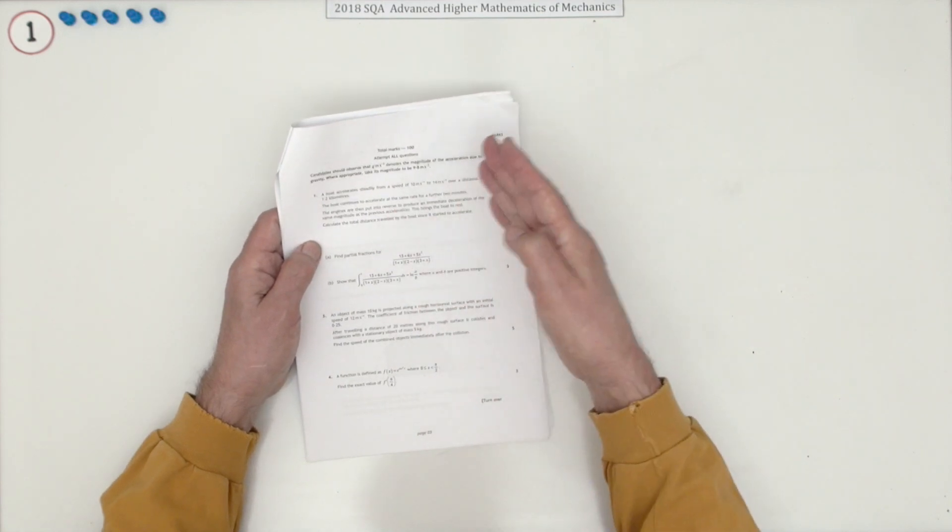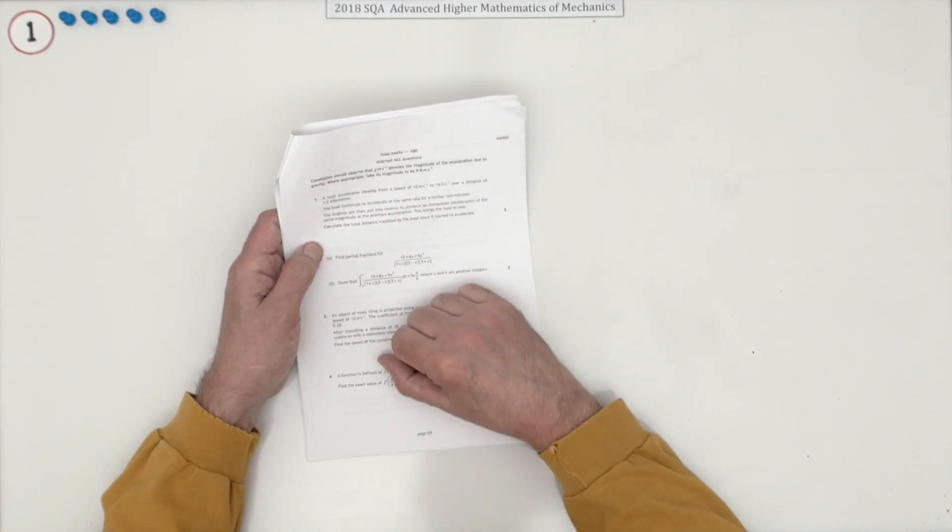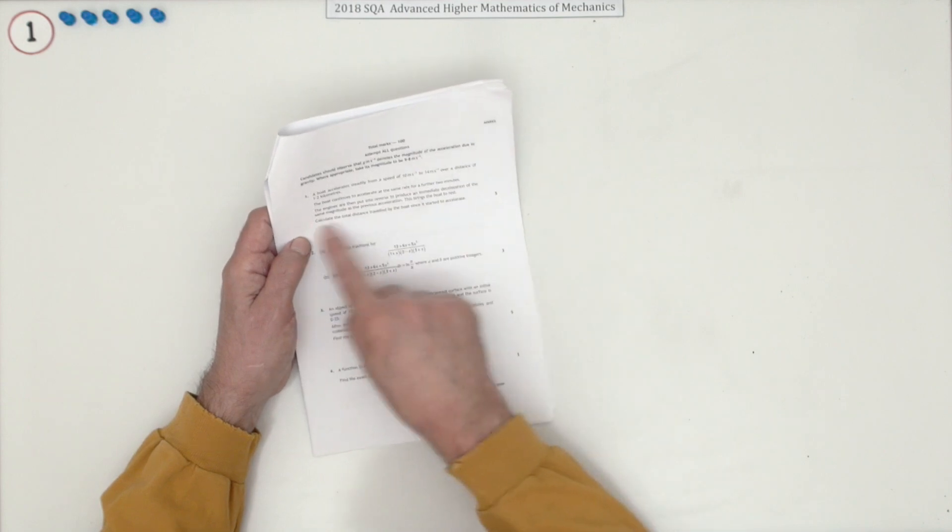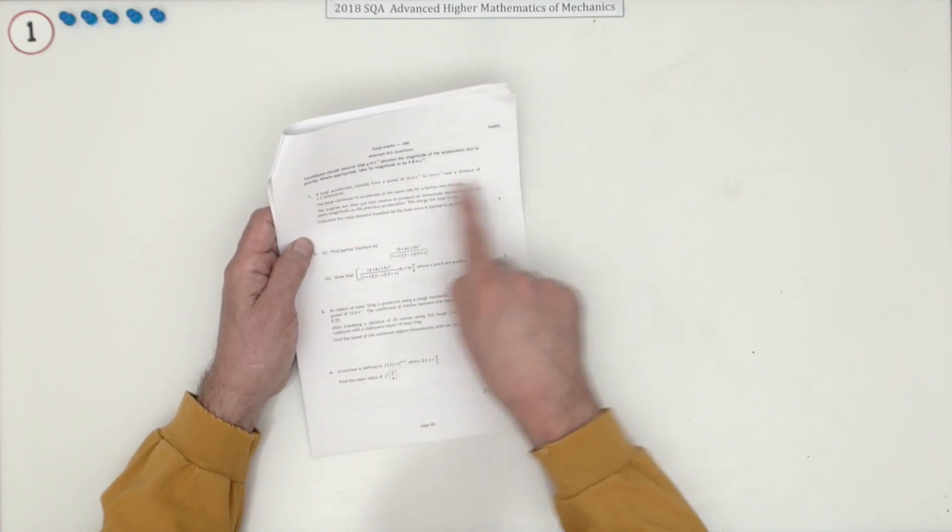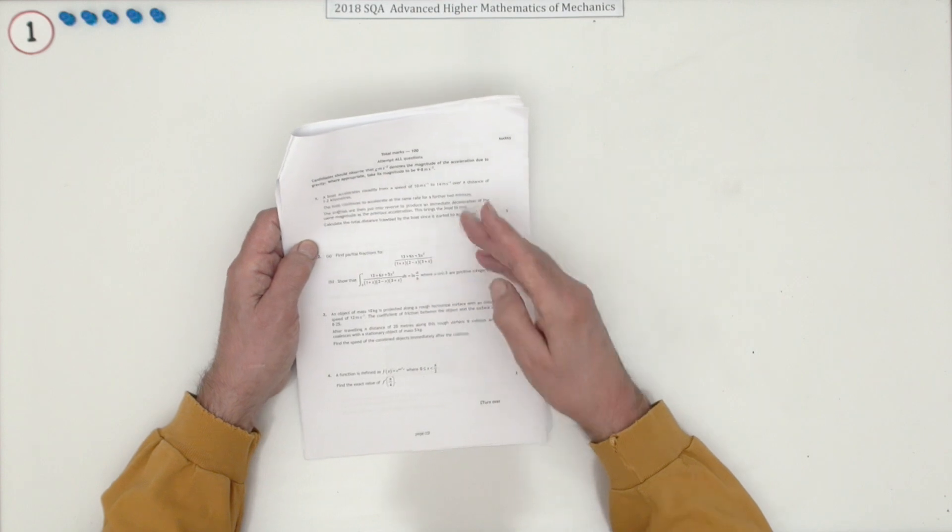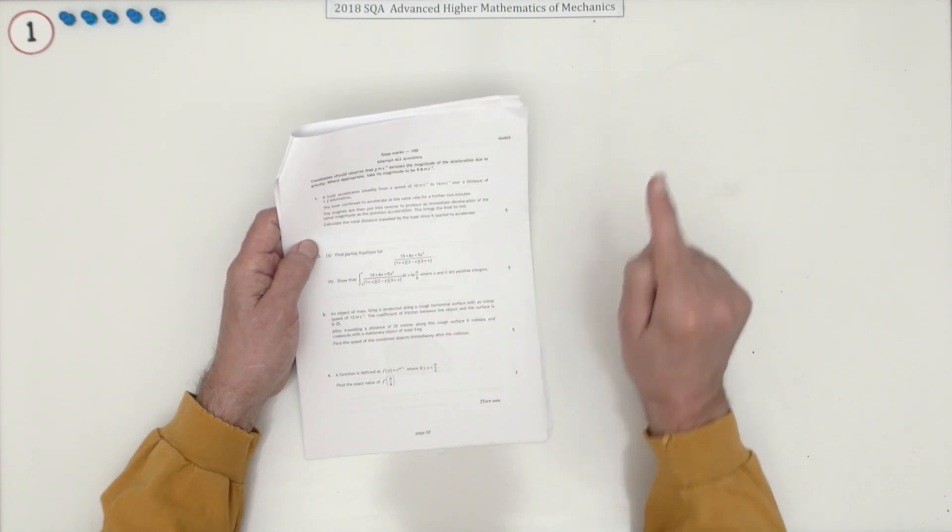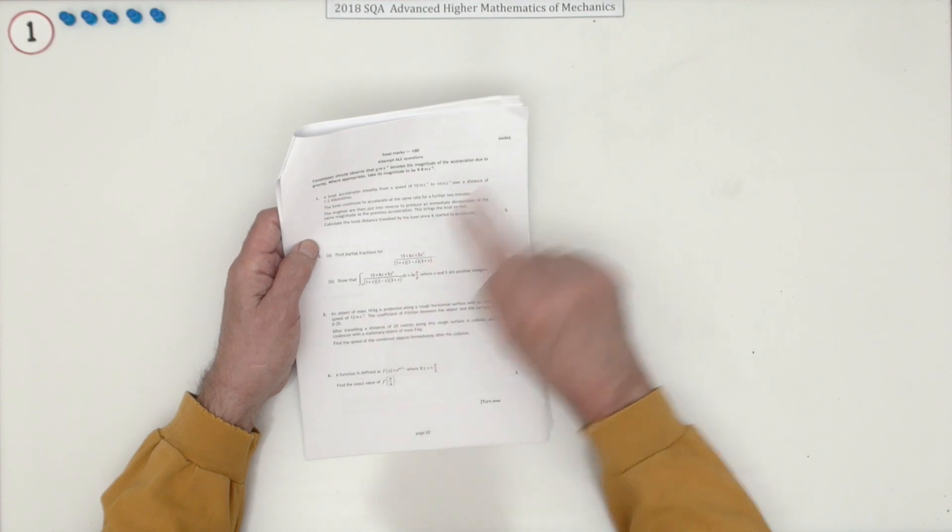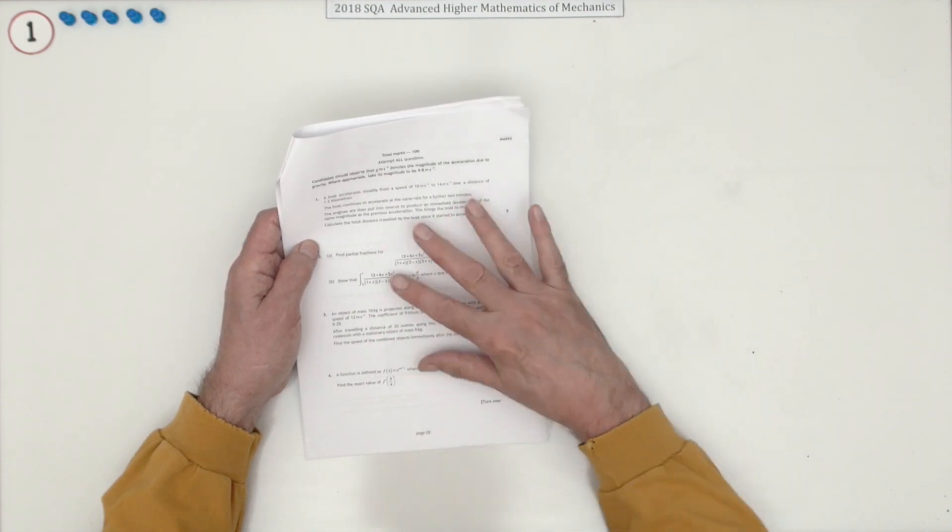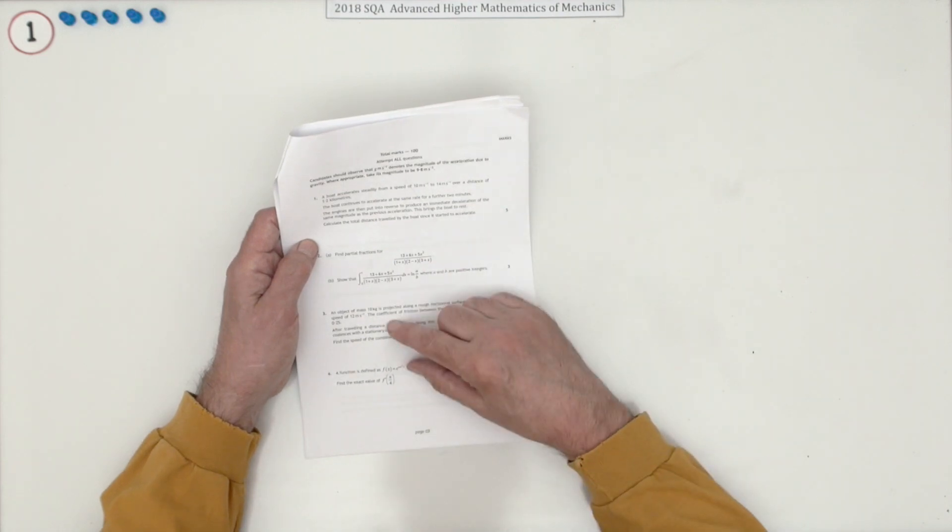So you could use your SUVAT equations here. Another thing you can do because it's asking for a total distance and it gives three stages to a journey, you could draw a speed time diagram because the area under the speed time diagram would be the total distance. Sometimes it's handy, sometimes there's not really any advantage.